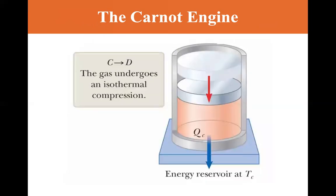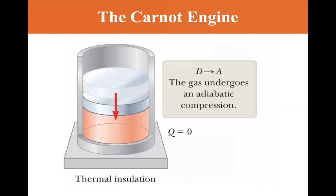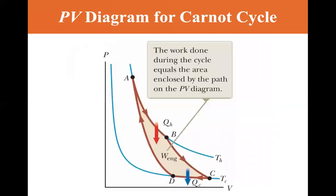And C to D, the gas undergoes an isothermal compression. So it's hooked up to an energy reservoir, T-cold, and it's compressed. And then the gas undergoes an adiabatic compression. Again, Q equals zero. And remember, A to B is isothermal, then an adiabatic expansion. This is an isothermal compression, and this is an adiabatic compression. So this is the PV diagram of the same Carnot cycle that we saw.